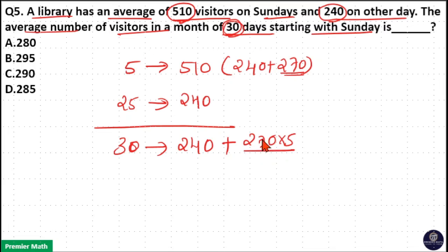This extra visitors should be equally distributed to these 30 people to find the extra average. 270 into 5 by 30, which is equal to... 30 equals 9 times in 270. 9 into 5 is 45. 45 plus 240 is 285.